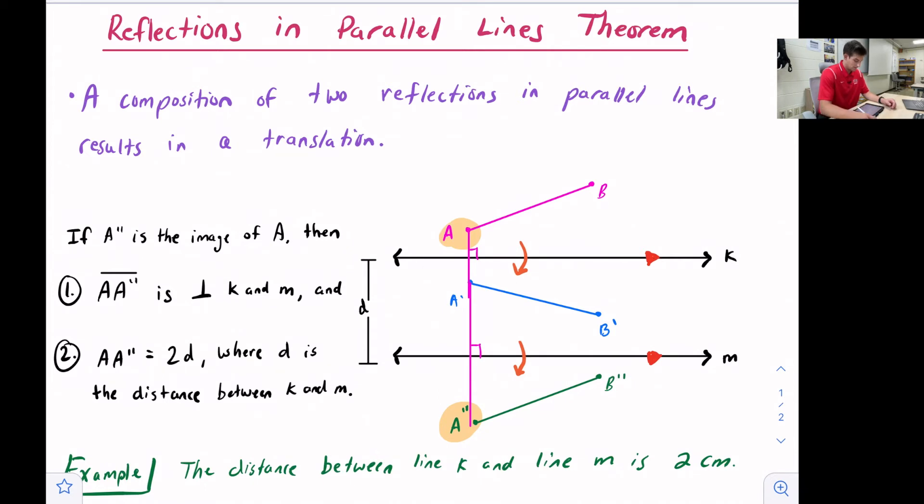Another thing that we can say is that the distance from A to A double prime is two times d, where d is our distance between the two parallel lines. So just some properties that we can prove about this diagram.